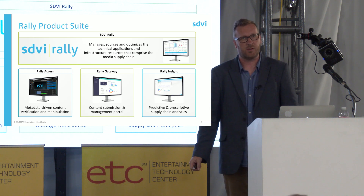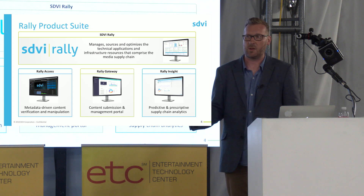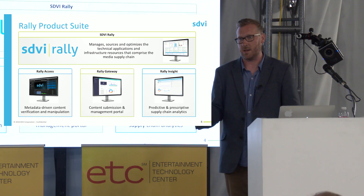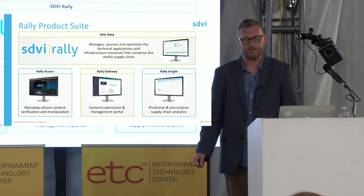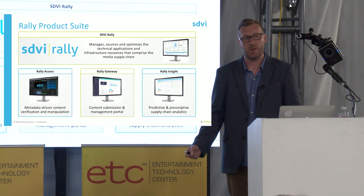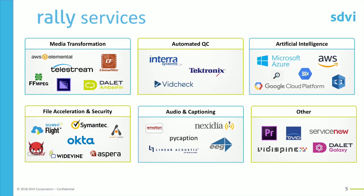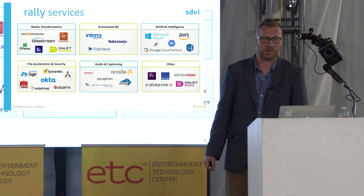Rally Gateway is an application designed for putting stuff into the factory and getting stuff out of the factory. If you're a big media network, you don't necessarily produce the content directly, but the people who do produce the content need a mechanism for delivering it to you and need to know that it's been accepted and they're going to receive payment for the production of that material. And then the final piece is Rally Insight, which is designed to leverage the data and analytics gathered by the platform to make recommendations for how you can further optimize your factory automation process. We're not building transcoders and QC tools ourselves — we're basically leveraging the best-of-breed tools, and the one I'm going to focus on today is the artificial intelligence tools we've built directly into the platform.